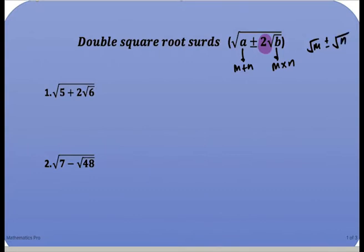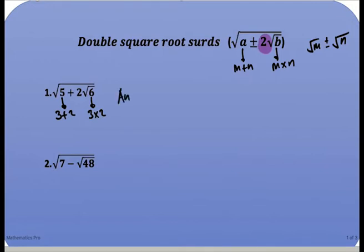Let us start with the first example. Five is just like a and six is just like b. So if we think of two numbers that when we add them together it will give us five — that is three plus two — and if we multiply the two numbers together it will give us six, so three times two is six. Everything is perfect, so our answer will be equal to the square root of three plus the square root of two.